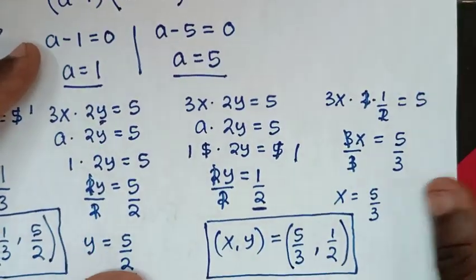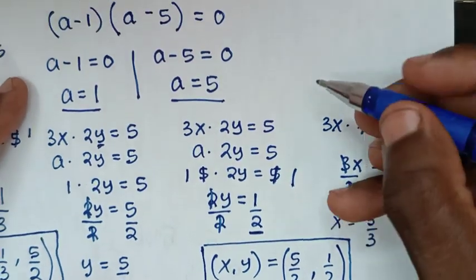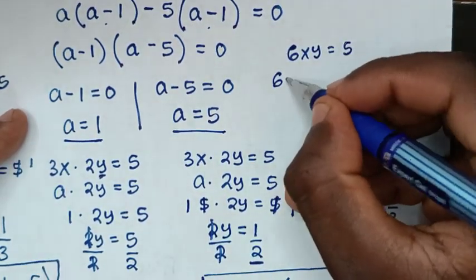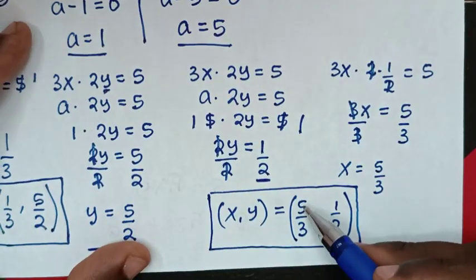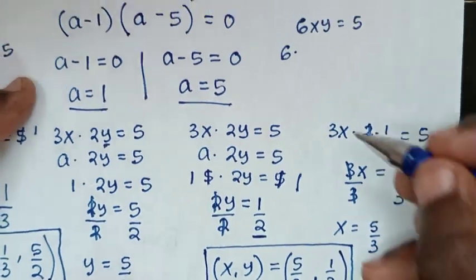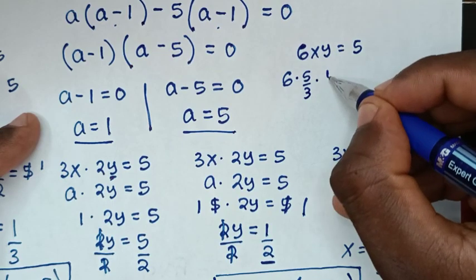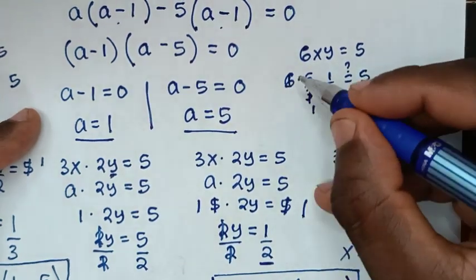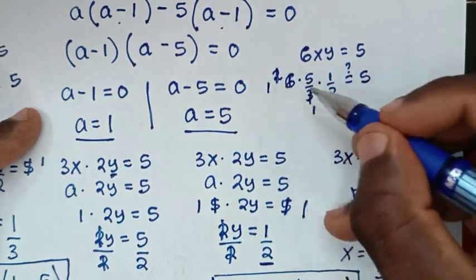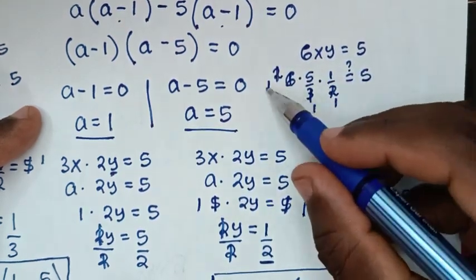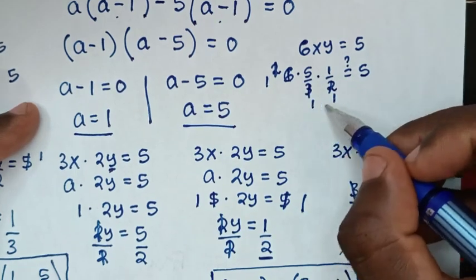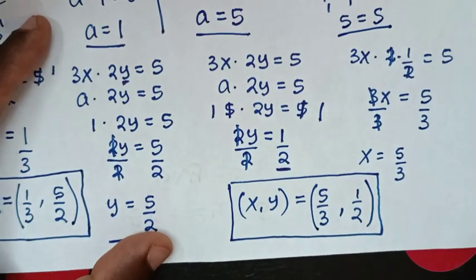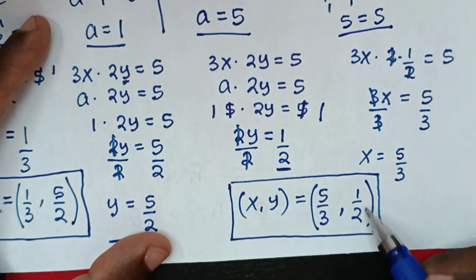To check the second solution, we substitute x equals 5 over 3 and y equals 1 over 2 into 6xy equals 5: 6 times (5/3) times (1/2). The 6 and 3 cancel, and the remaining 2 cancels, giving 1 times 5 times 1 over 1 equals 5. So 5 equals 5, and left side equals right side. It is confirmed true for x equals 5/3 and y equals 1/2.